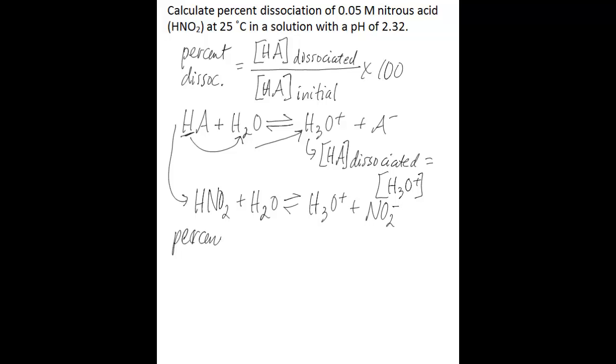The percent dissociation here is going to be equal to the concentration of nitrous acid that is dissociated divided by the initial concentration of nitrous acid multiplied by 100.